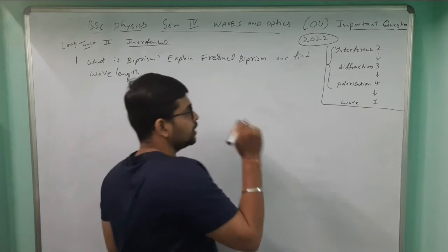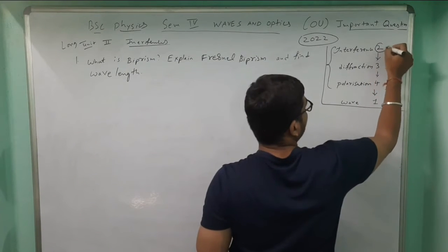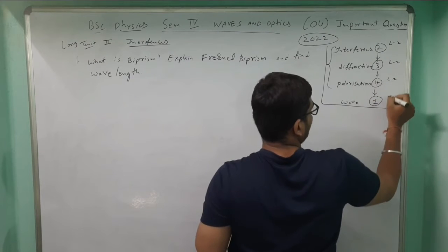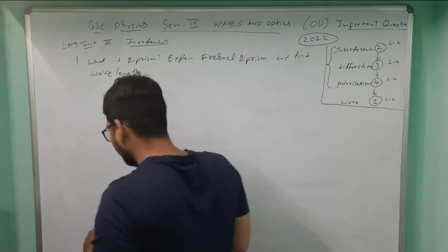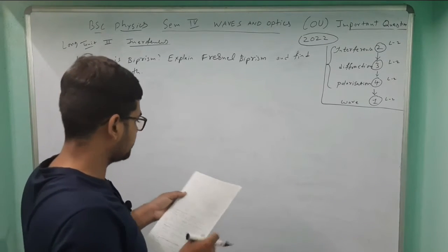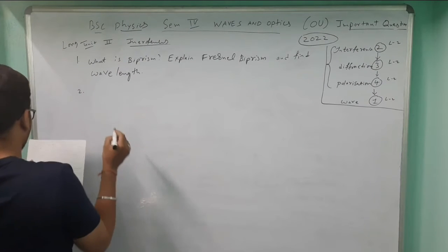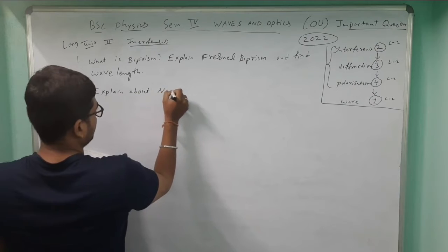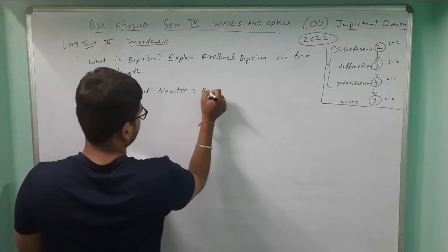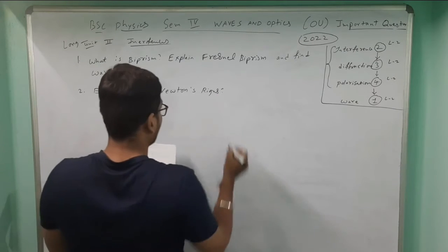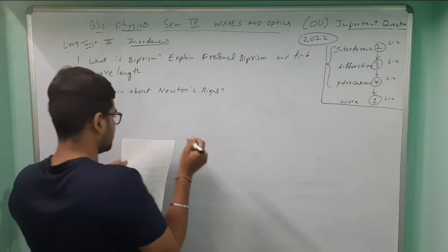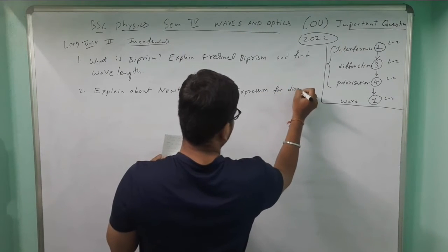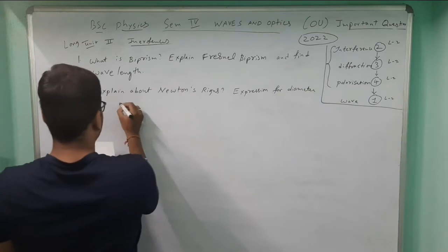For unit two I'll give two long answer questions and two short answer questions — that is enough for you to pass. The second question is: explain Newton's Rings. After Newton's Rings, you need to know the expression for the diameter of the bright fringe.